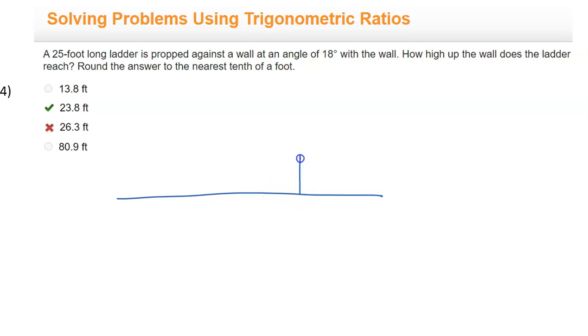Here's my wall, and we have this ladder that is propped against the wall. This is going to be my ladder, and it says it's at 18 degrees with the wall. That means 18 degrees between the ladder and the wall, so we'll have 18 degrees right here. Of course, this is a right angle.